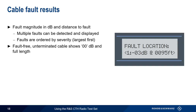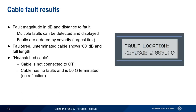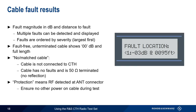There are also two special messages. "No/Matched Cable" means either that no cable is connected to the CTH, or that the cable has no faults and terminates into a pure 50-ohm load — a matched load absorbs all of the transmitted signal, so there would be no reflections. The other special case is "Protection," which means that another source of RF was detected on the cable. In this case, be sure that there are no other sources of RF present on the cable while running the test.